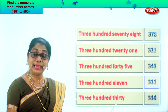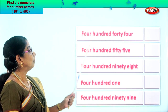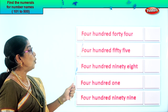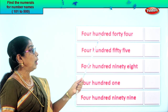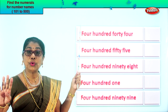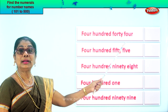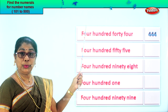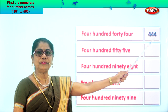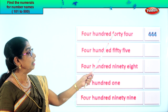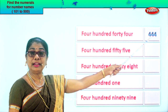Let's get on to another exercise and learn to read the number name and fill in the numeral correctly. Let's look at this: four hundred forty-four. Four in the hundreds place, forty-four — four in the tens place, four in the ones place. Read this: four hundred forty-four. Just as you read the number name, you fill in the numeral — four hundred forty-four.